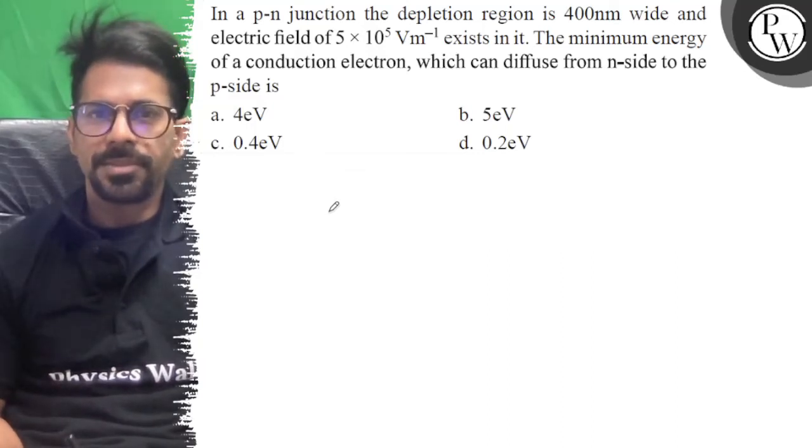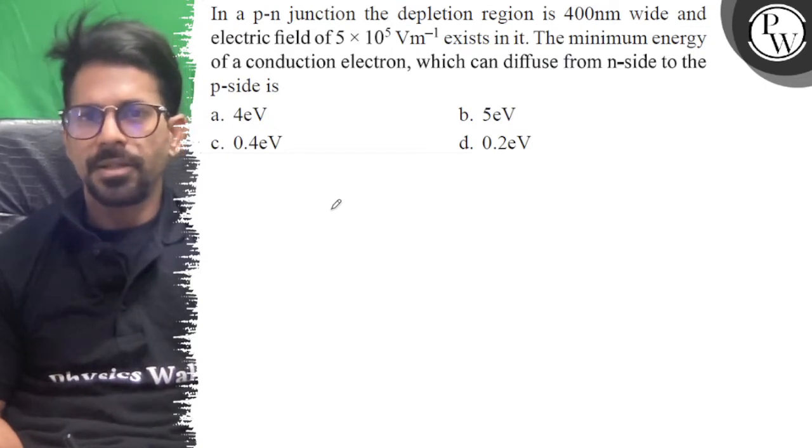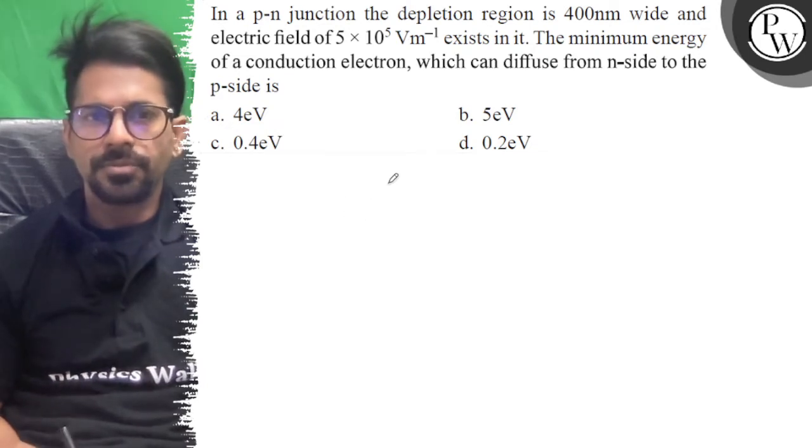Hello, let us see the question. In a PN junction, the depletion region is 400 nanometers wide and electric field is 5×10^5 volts per meter. The minimum energy of a conduction electron which can diffuse from n-side to p-side.